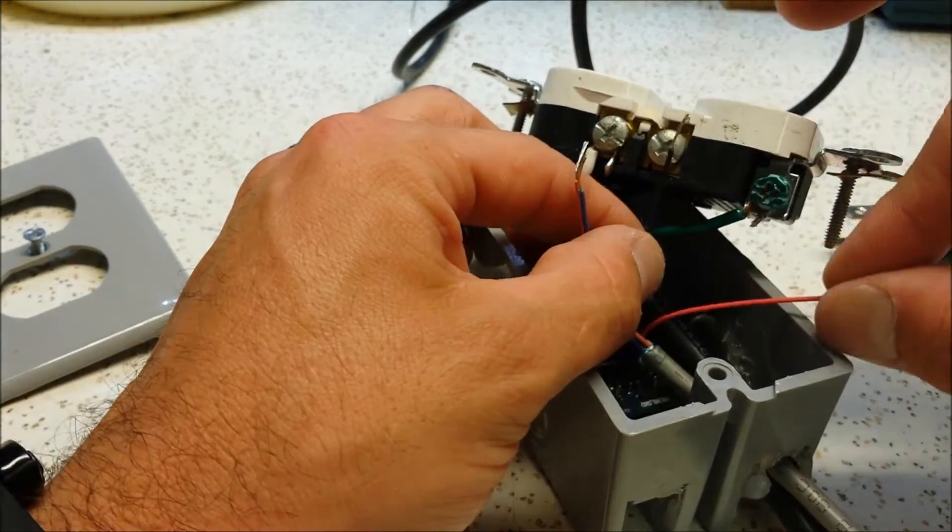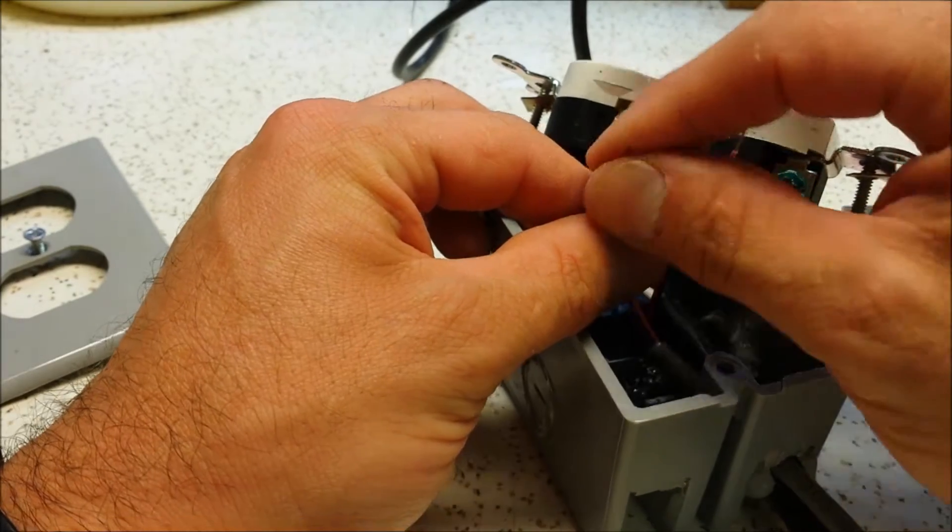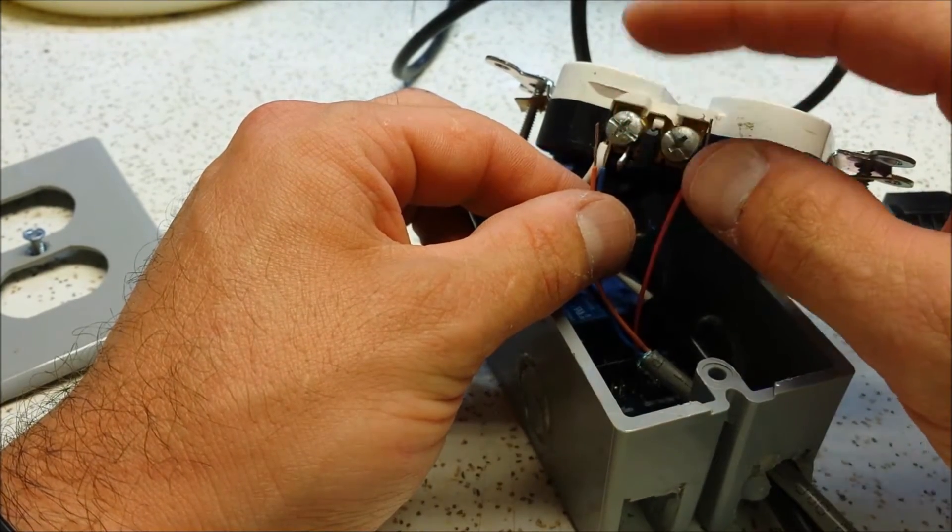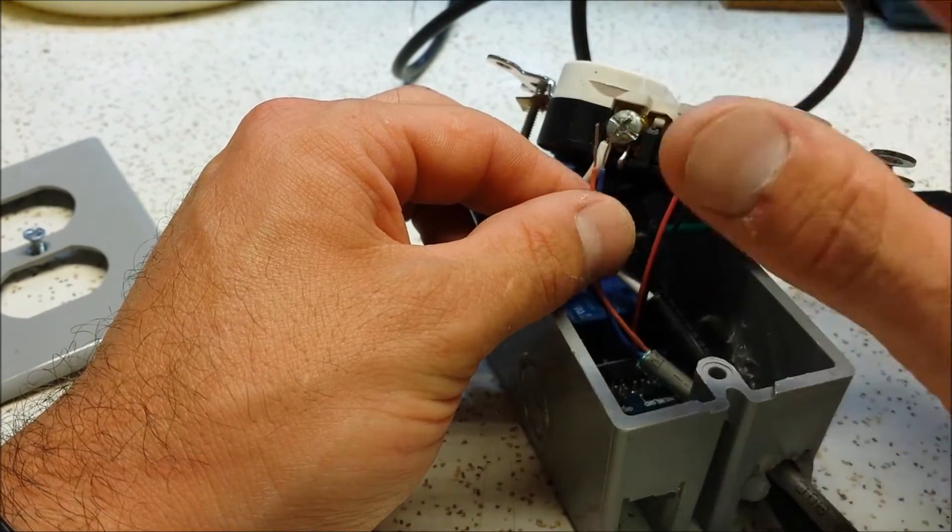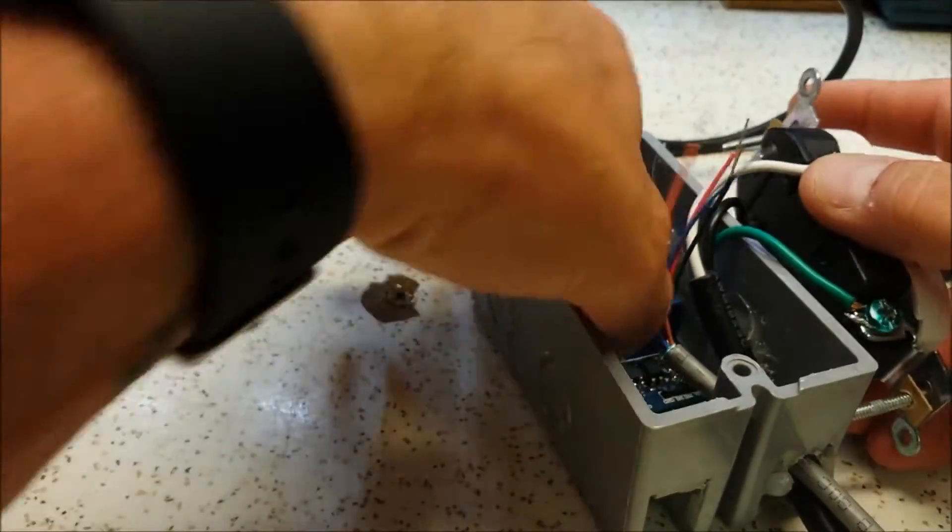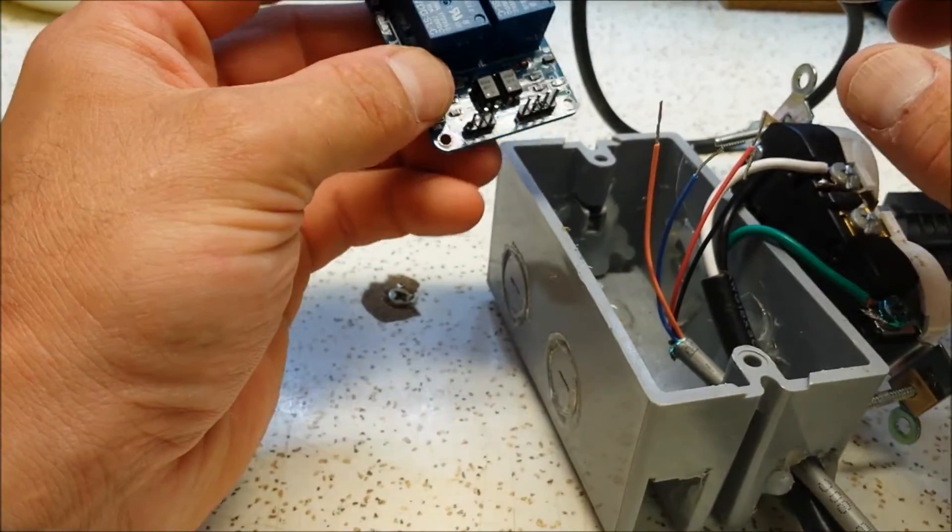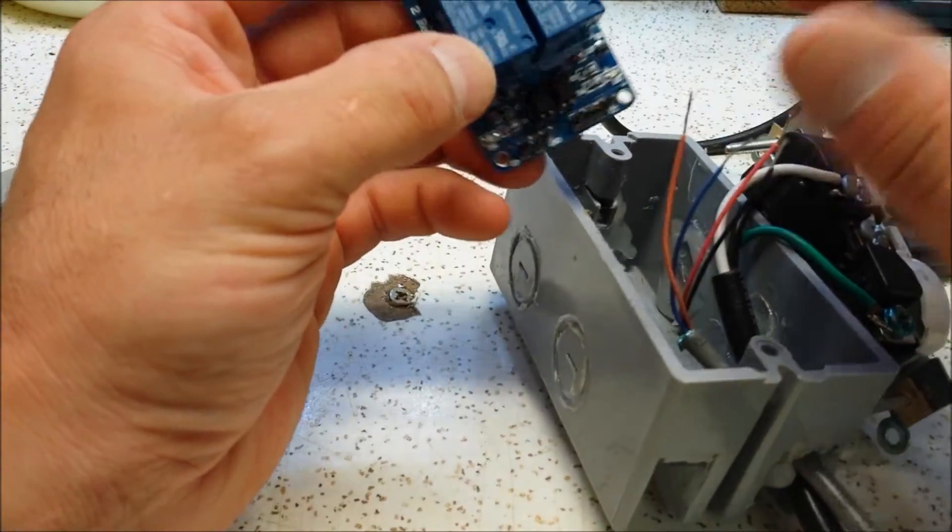And then what will happen is I'll have this gray wire here running out, which will be five volts ground and then my two inputs, which will be if you write the output high, it'll actually activate the relays. So anyhow, I figured it'd be interesting just to kind of take you along and show you how I do that.